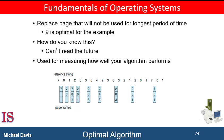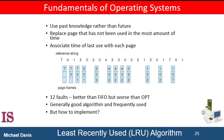Unfortunately, the optimal page replacement algorithm is hard to implement because it requires future knowledge of the reference string. As a result, the optimal algorithm is used mainly just for comparison. Instead of basing it on the page that will not be needed for the longest time, we base it on the frame that has not been used in the longest time. If we use the recent past as an approximation of the near future, then we can replace the page that has not been used for the longest time. This approach is the least recently used algorithm. LRU replacement associates with each page the time of that page's last use. When a page must be replaced, LRU chooses the page that has not been used for the longest time.